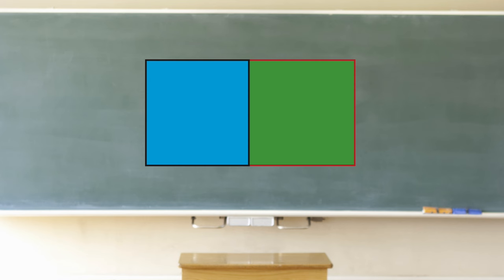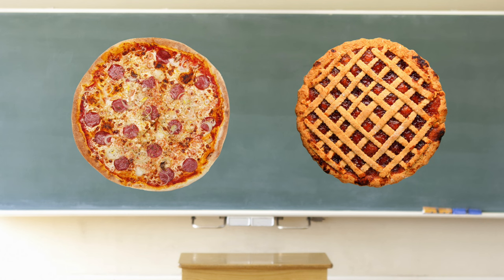Remember, two halves, three thirds, and four fourths each equal one whole. It could be one whole circle, one whole rectangle, or even one whole pizza or pie.